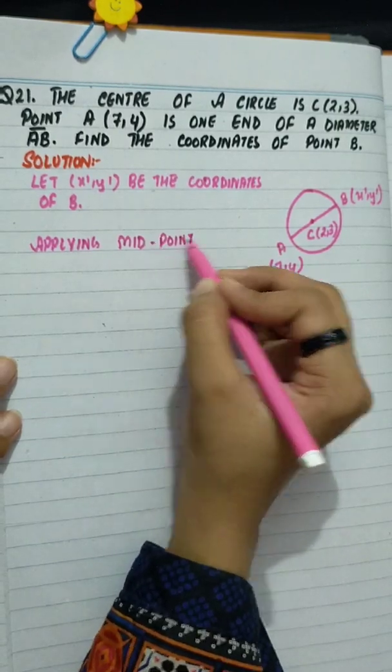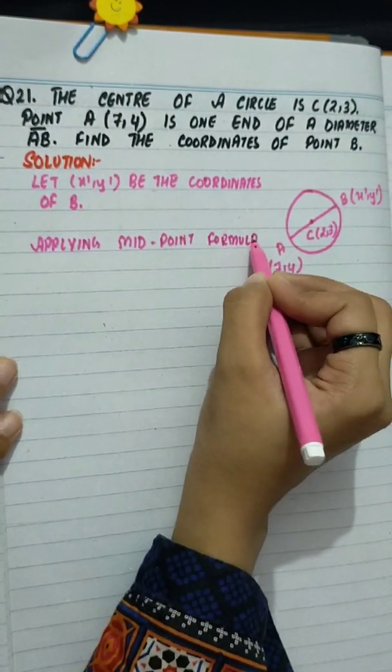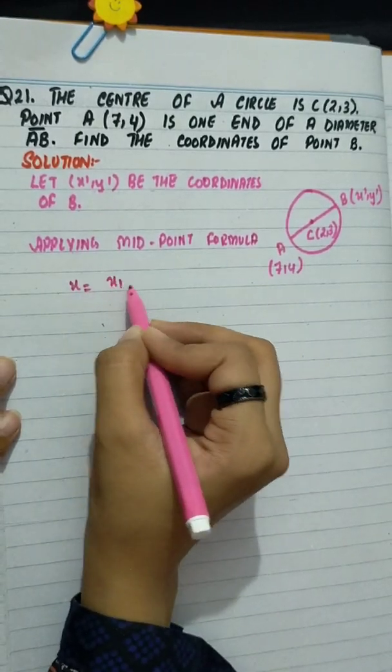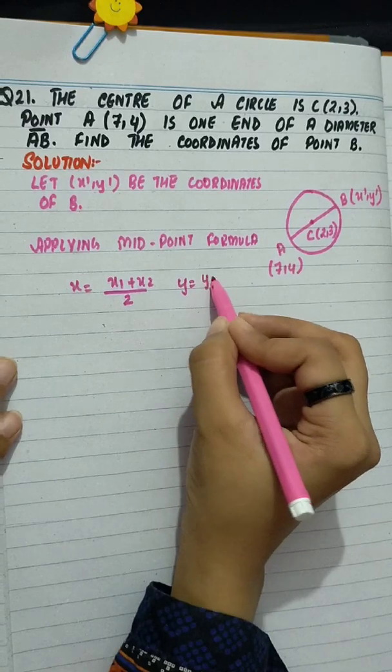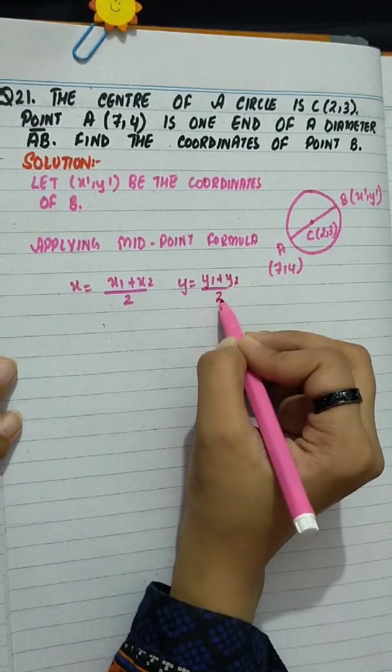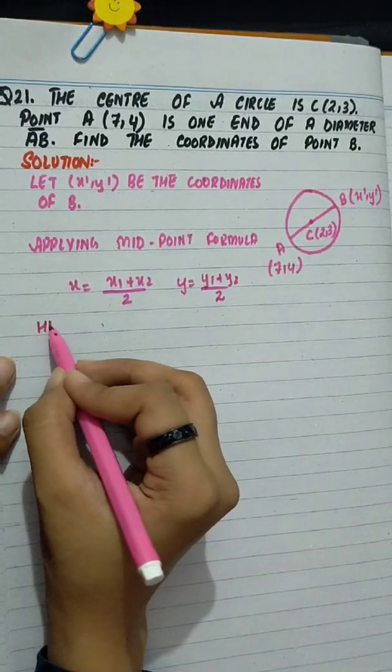Applying midpoint formula. x equals x1 plus x2 divided by 2, and y equals y1 plus y2 divided by 2.